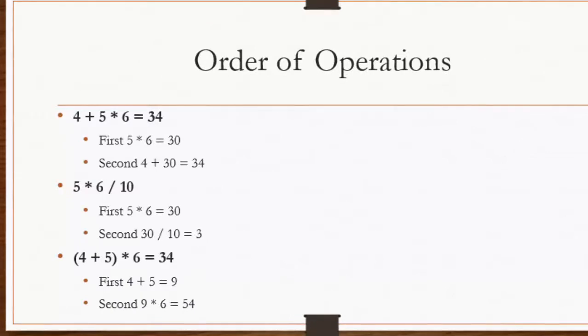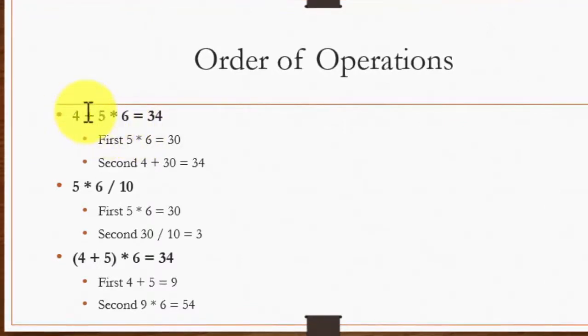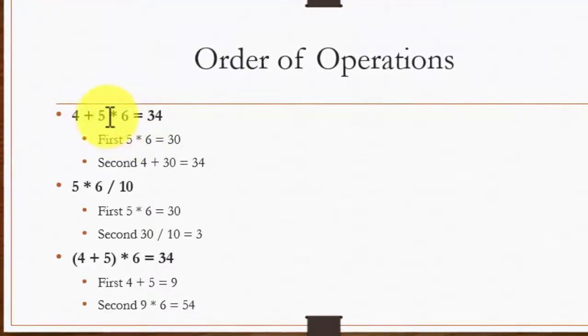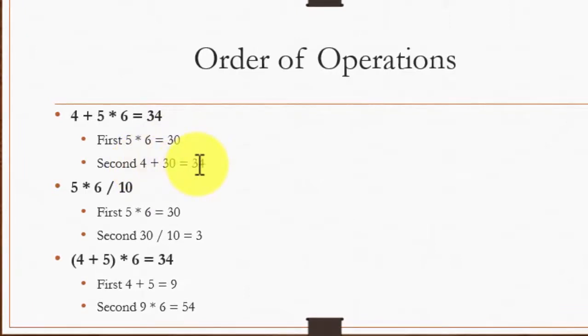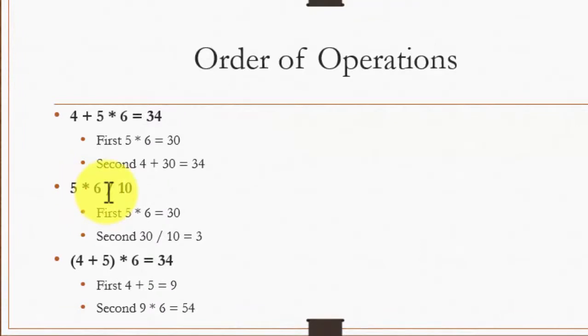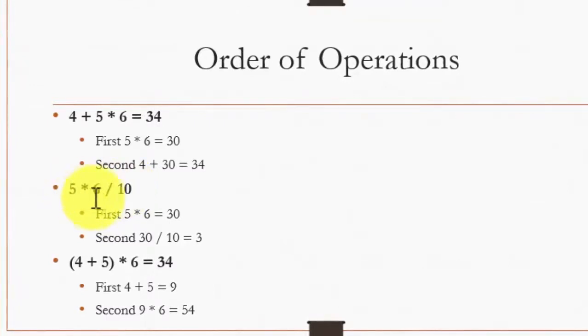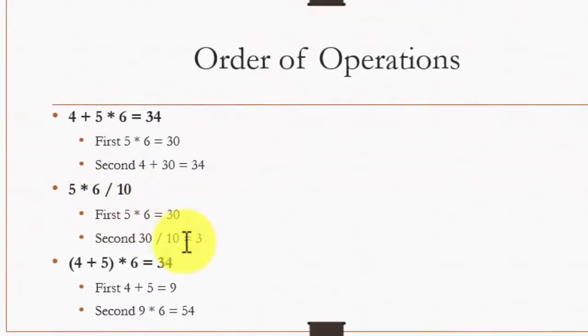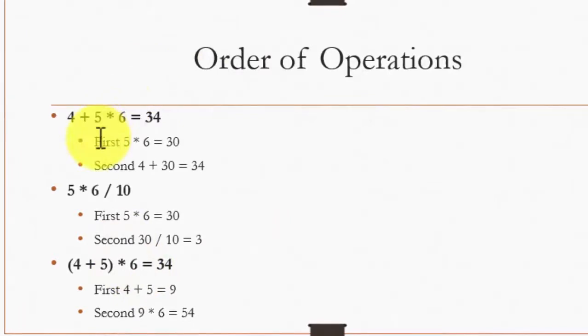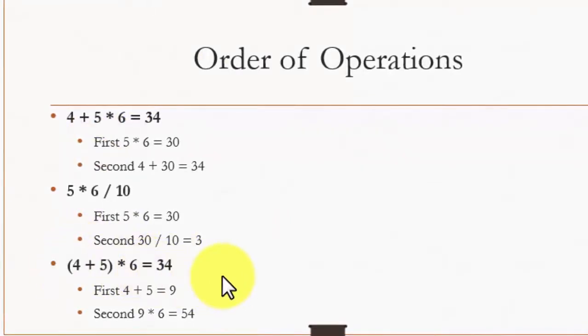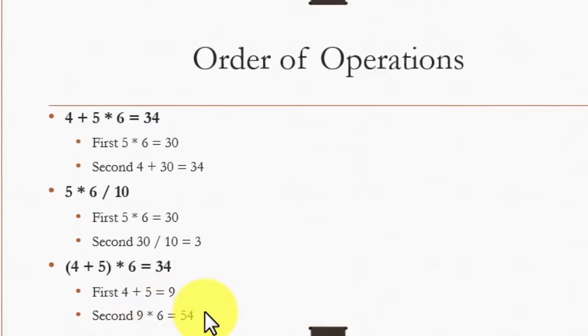Now we are going to be looking at the order of operations when multiple operators are found in an expression. Let's look at the first one here: 4 + 5 × 6. Now 5 × 6 will be evaluated first, which equals 30. Then 30 will be added to 4 to give you the answer 34. Now let's look at 5 × 6 ÷ 10. Since multiplication and division are at the same level, first we're going to be doing 5 × 6 which gives us 30. Then 30 will be divided by 10 to give us 3. In the last example, which is exactly the same as the first one but with the inclusion of parentheses, addition will happen first. So we're going to have 4 + 5 which equals 9. Then 9 will be multiplied by 6 to give us the answer of 54.